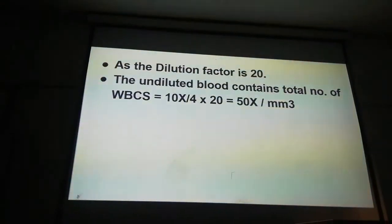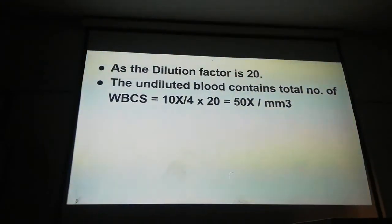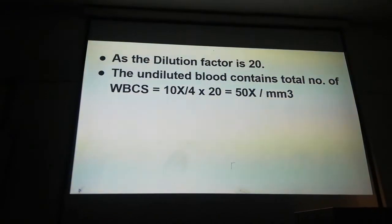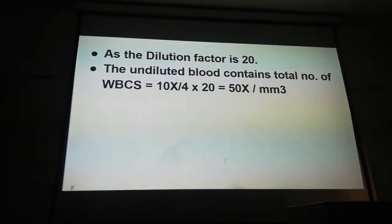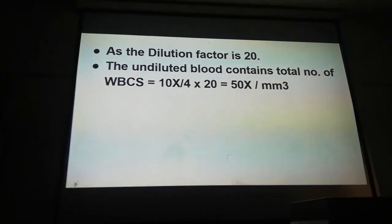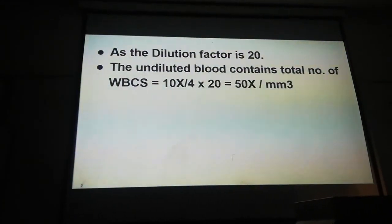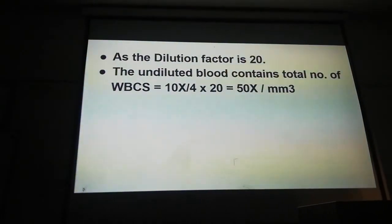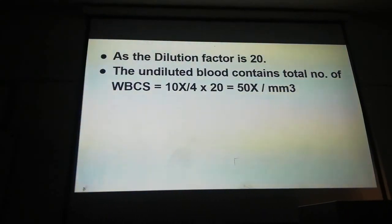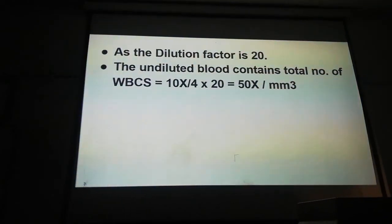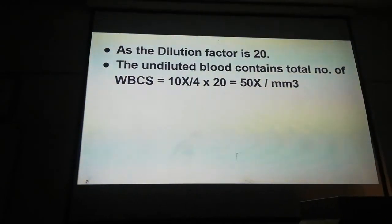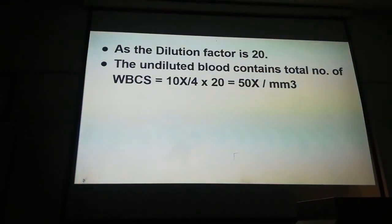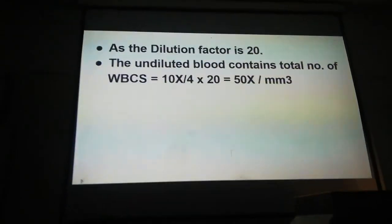Since the dilution factor is 20, we can conclude that the undiluted blood contains a total WBC count of 10x/4 × 20, which equals 50x per mm³. You have to count the WBCs in the Neubauer chamber and by using these calculations you will get the number of WBCs in 1 mm³ of undiluted blood. That is all for the calculation of WBC count by Neubauer chamber. Thank you very much.